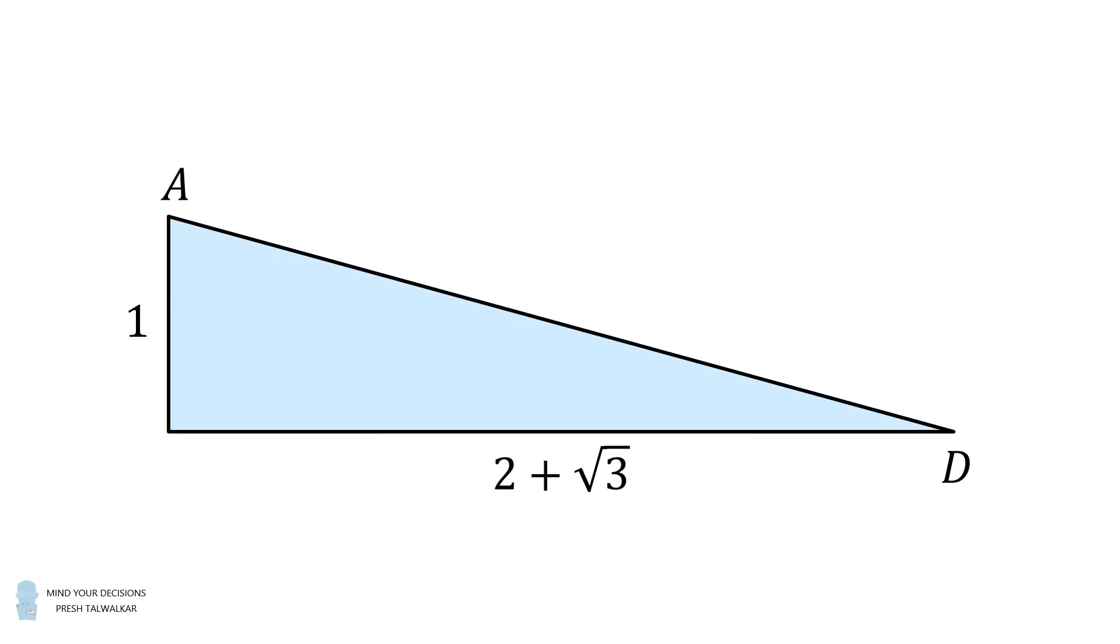So we can figure out the length of AD. It'll be equal to the square root of the quantity 2 plus the square root of 3 squared plus 1 squared. We now just need to simplify this.